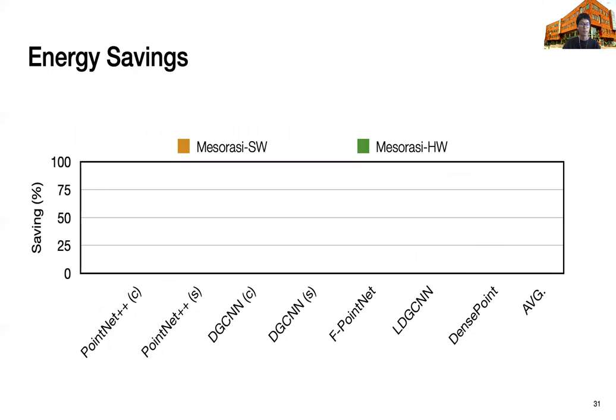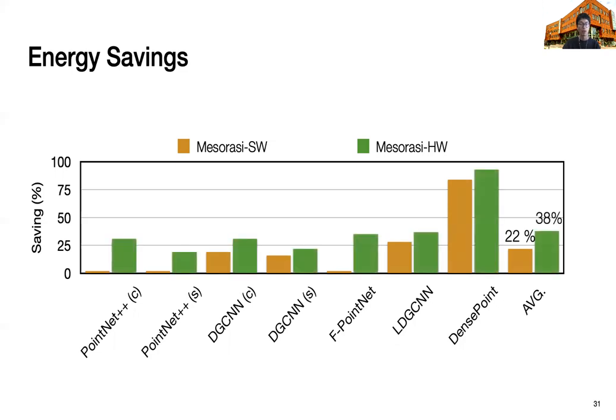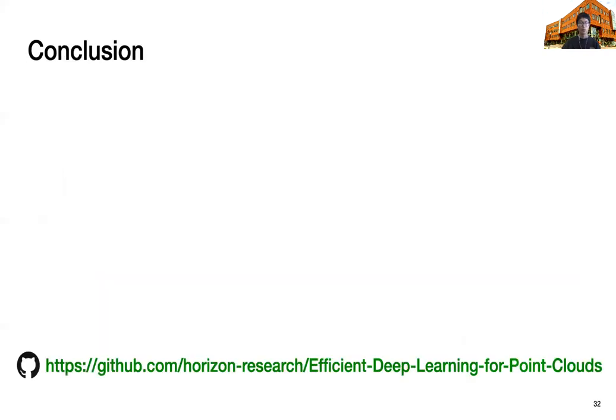Here, we show energy saving. Again, the x-axis shows different networks, and y-axis shows energy saving. Without hardware support, Maserati software can only save 22% of energy. However, with additional hardware support, we can achieve 38% of energy saving.